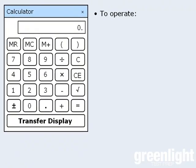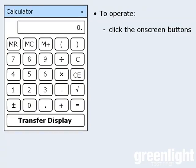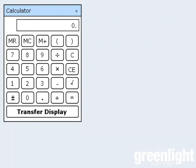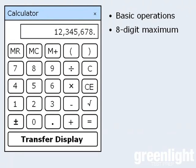To operate the calculator, you can either use the mouse to click the buttons directly on the screen, or if you wish, you can use your keyboard to enter the values. Now, as you can see, the calculator has only the most basic operations. And I should point out that the display holds only 8 digits. So any calculation that requires more than 8 digits will yield an error message.